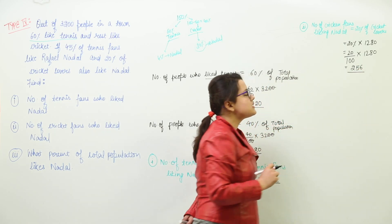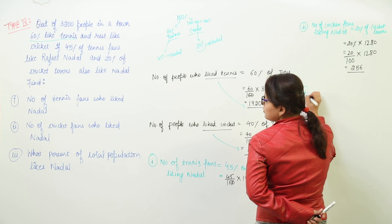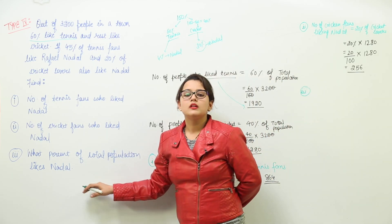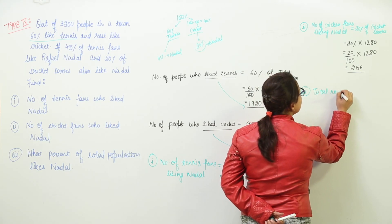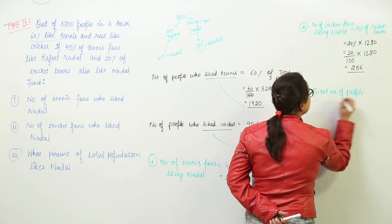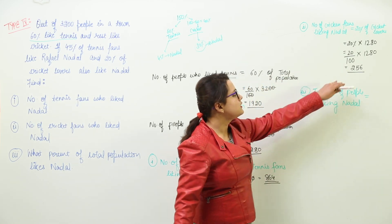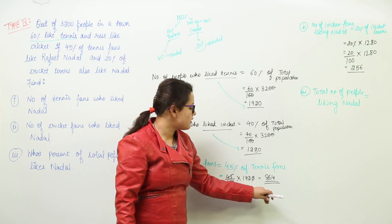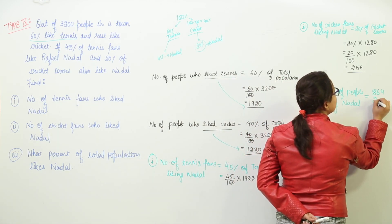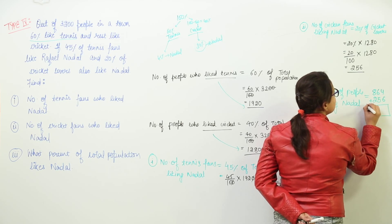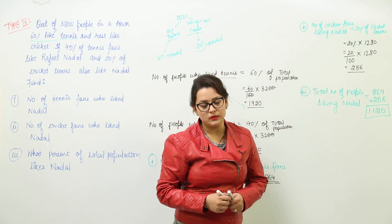So there are 256 cricket fans who liked Nadal. Moving on to the third part, which asks us to find the percentage of total population liking Nadal. We need to find the total number of people who liked Nadal — either cricket lovers or tennis lovers. Adding 864 and 256 together gives us 1120. So there are 1120 people out of 3200 who liked Nadal.